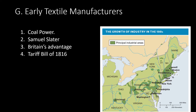Britain kept much of its industrial knowledge secret, seeking to prevent the export of machines or the publication of descriptions of them. Yet Samuel Slater brought plans for water-powered spinning machines to America — he had memorized them. He came into contact with Moses Brown, and together they built the first mill in Pawtucket, Rhode Island. This system was called the putting-out system: a system of manufacturing in which merchants furnished households with raw materials for processing, creating a business relationship between merchants and household artisans.